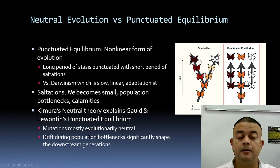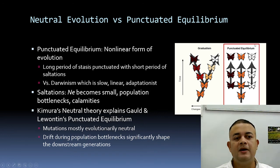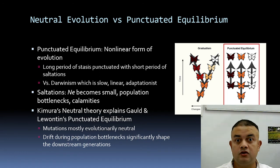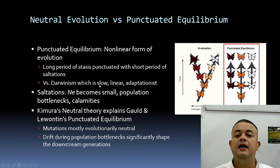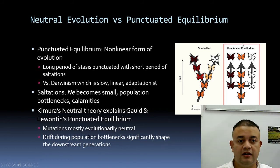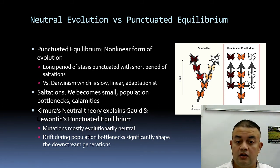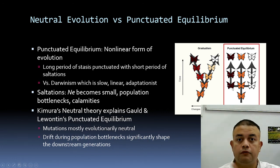Stasis is a long period of evolutionary hibernation — status quo — punctuated by short periods of saltation. That is punctuated equilibrium. Compared to Darwinism's slow, linear, adaptationist process, punctuated equilibrium is more common in the fossil record. Interestingly, Kimura's neutral theory overwhelmingly favors the punctuated equilibrium model of evolution — it explains Gould and Lewontin's observations from paleontology.